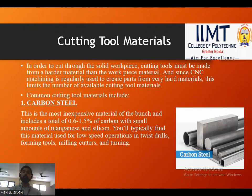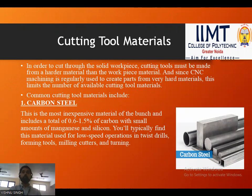Cutting tools must be made from a harder material than the workpiece material. Since CNC machining is regularly used to create parts from very hard materials, this limits the number of available cutting tool materials. The first common cutting tool material is carbon steel — the most inexpensive material, containing 0.6 to 1.5% carbon with small amounts of manganese and silicon. It is typically used for low-speed operations in twist drills, forming tools, milling cutters, and turning.